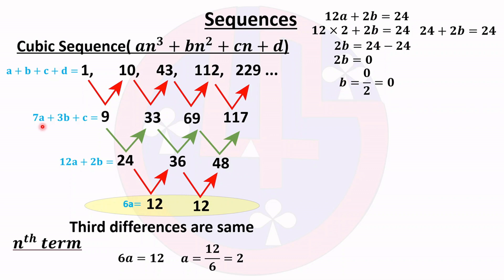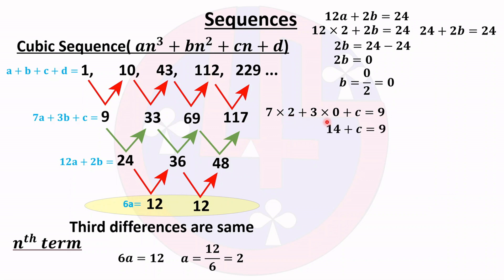Taking the third equation, 7a + 3b + c = 9, and substituting a = 2 and b = 0: 7(2) + 3(0) + c = 9, which gives 14 + c = 9, so c = 9 − 14 = −5.